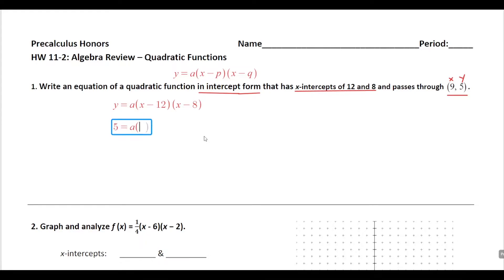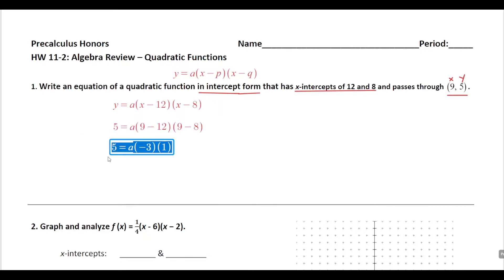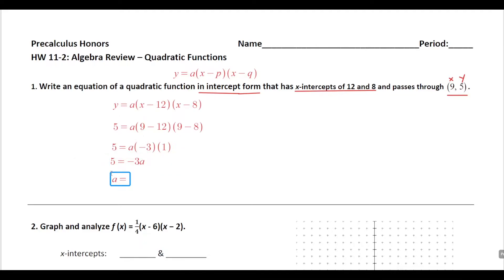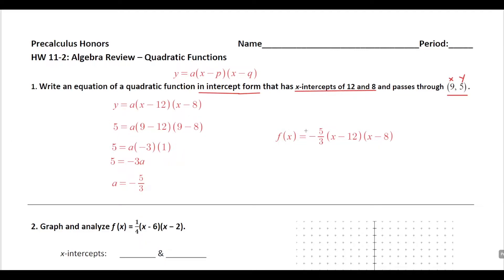So I'll put 5 here, and x is 9. So 9 minus 12 times 9 minus 8. Simplifying: 9 minus 12 is negative 3, and 9 minus 8 is 1. Negative 3 times 1 is negative 3. So we have 5 equals negative 3a. Dividing both sides by negative 3, we get a equals 5 over negative 3, or just negative 5 thirds. That's our leading coefficient, and now we can go back and fill in the a value.